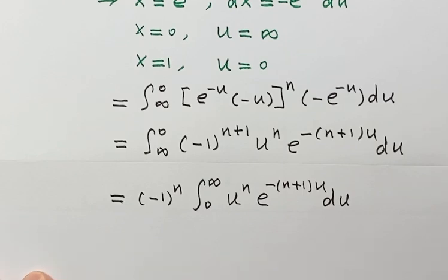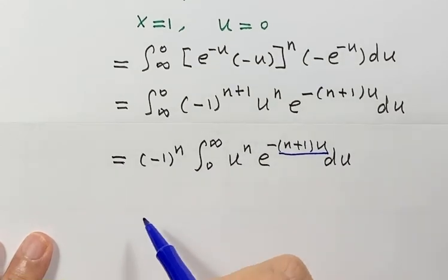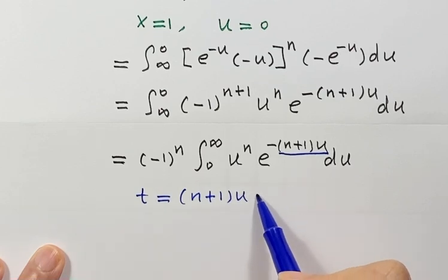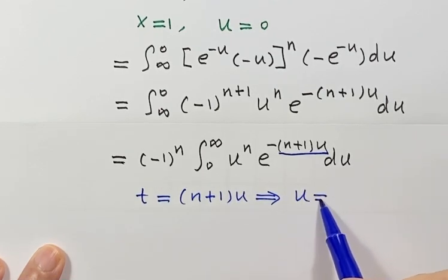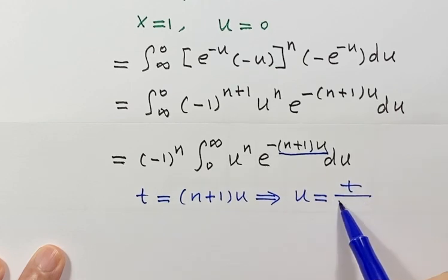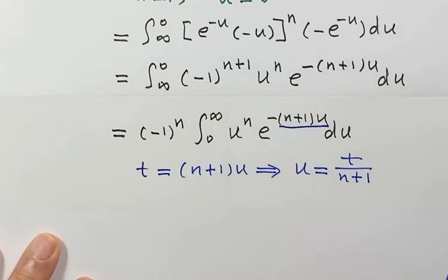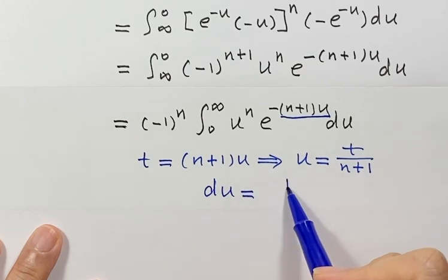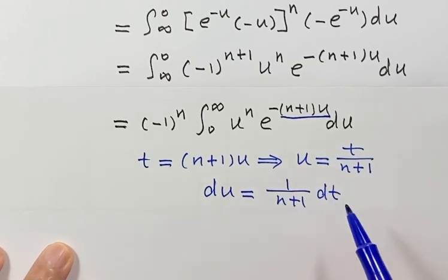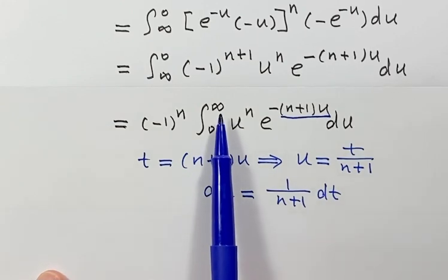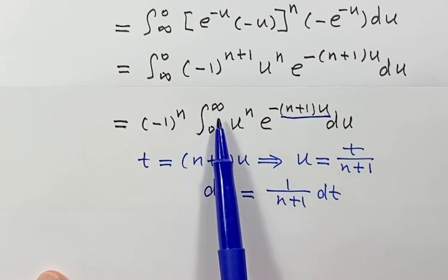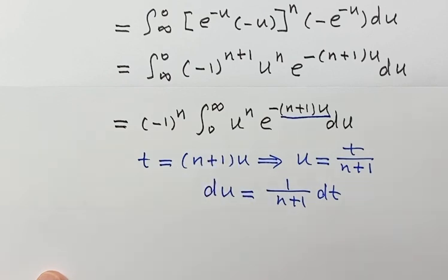Now we do another substitution for the term (n+1)u. Let t equal to (n+1)u, so u equals t over (n+1), and du equals 1 over (n+1) dt. The bounds remain the same: u from 0 to infinity corresponds to t from 0 to infinity.